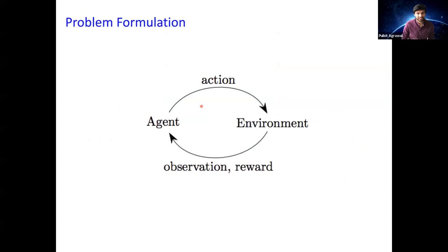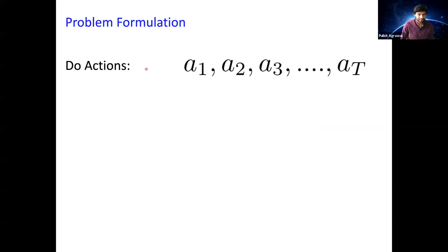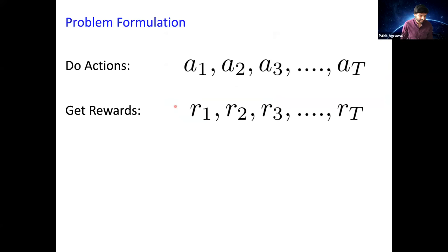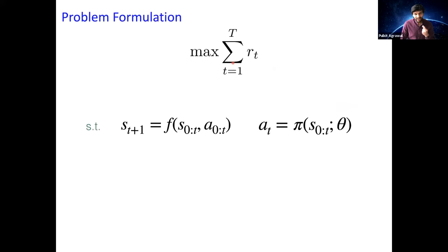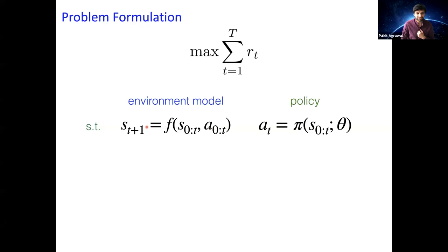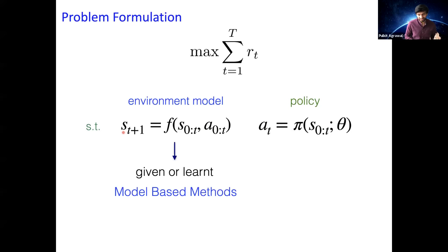Let's formalize this. I have a loop where the agent acts in the environment, I come to the next state, get the reward, and repeat. I'm doing actions a1 to aT, getting rewards r1 to rT, and trying to maximize the sum of rewards. The function that takes my current state and action to the next state is called the environment model. The mapping from state to action is called the policy. In some cases the environment model is given — for example in tic-tac-toe you know exactly what happens next, or if you're willing to assume physics.